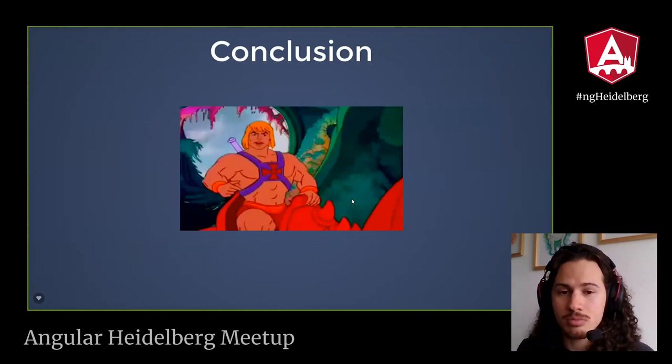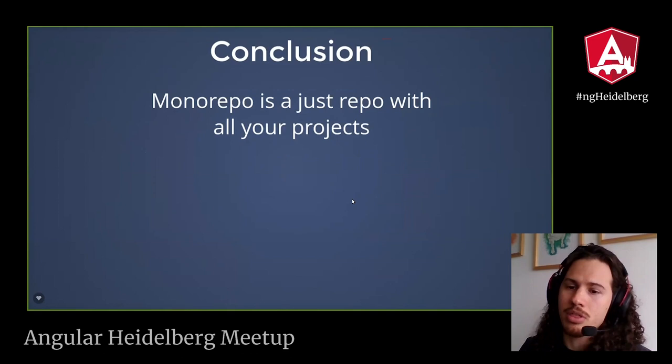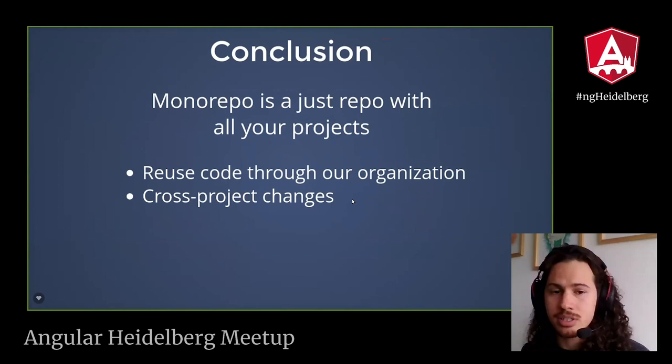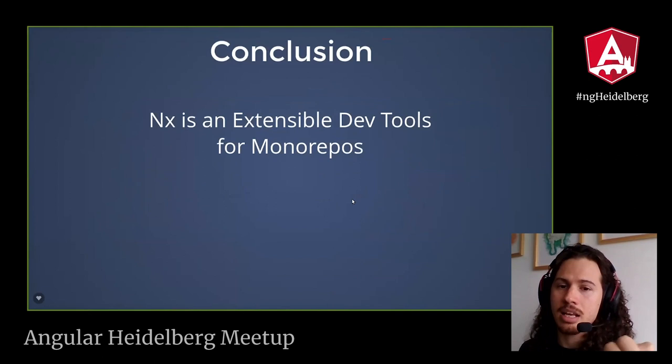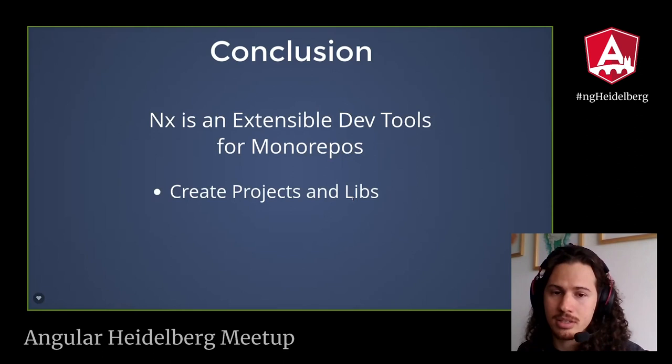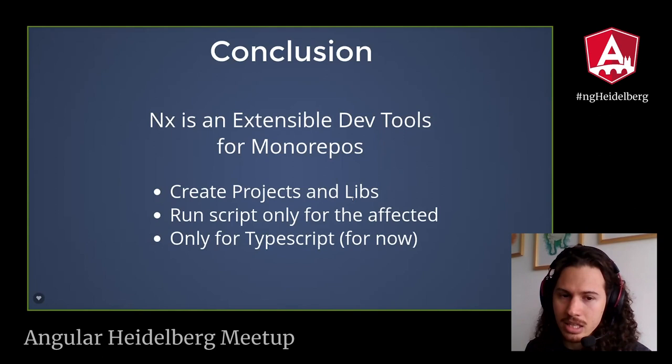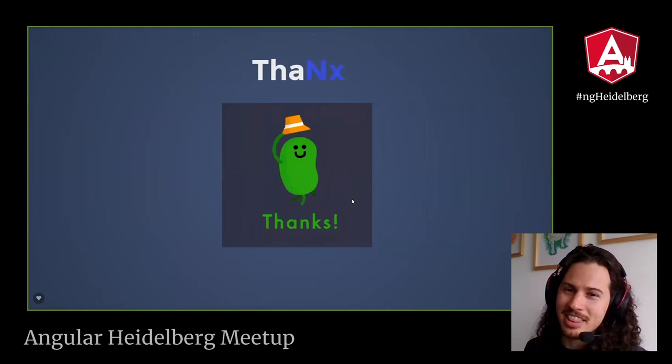So as a conclusion, my friends: Monorepo is just a repository with all your projects. With that you can reuse your code across your organization, make cross-project changes a lot easier, and it is a lot easier to maintain. NX is extensible dev tools for Monorepos where you can create libraries and projects and run scripts only for the affected applications. NX is currently only for TypeScript. Thank you.